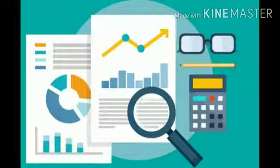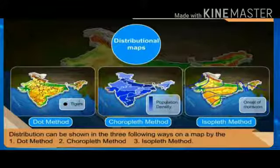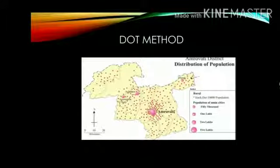Such maps easily bring out the patterns of distribution. To draw distribution maps, we need statistical data of the variables. Distribution can be shown in three following ways on a map: by the dot method, coropleth method, and isopleth method.